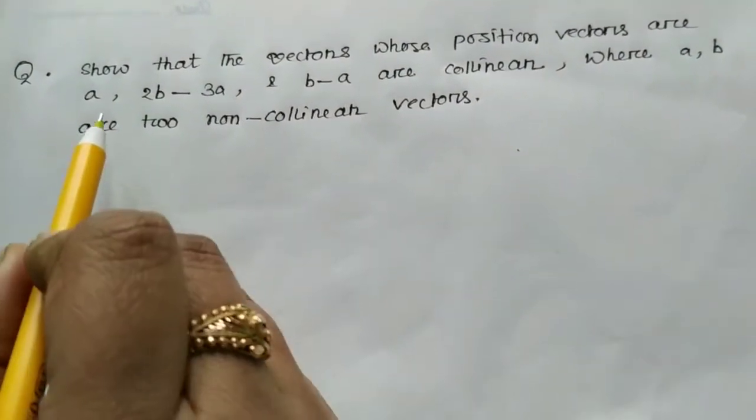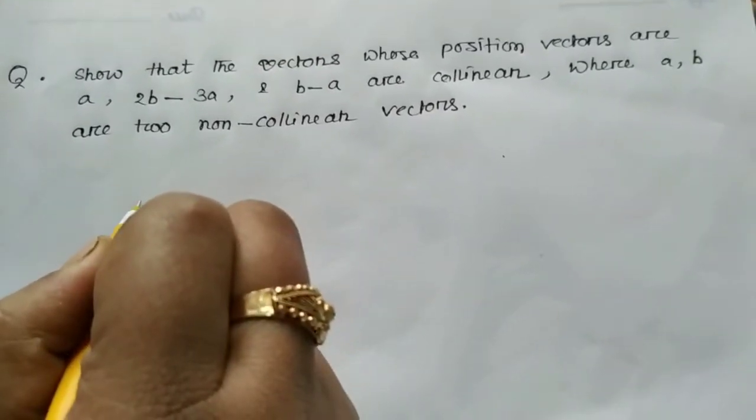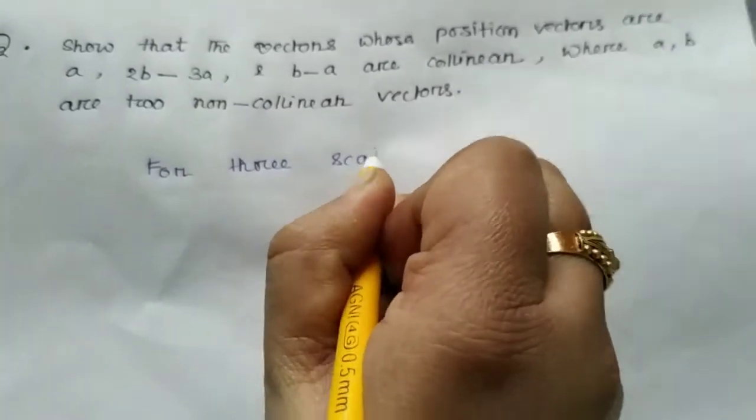So, let's start. We take some scalars x, y, z. We can write for three scalars x, y, z.